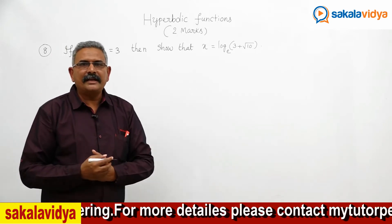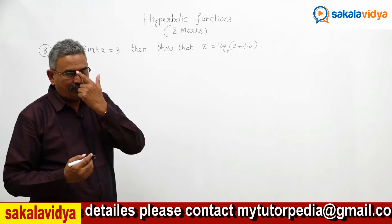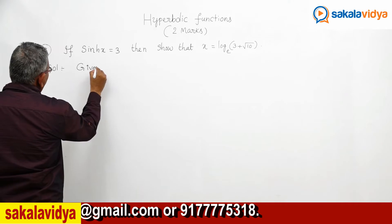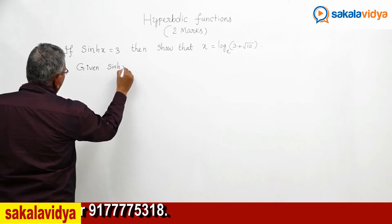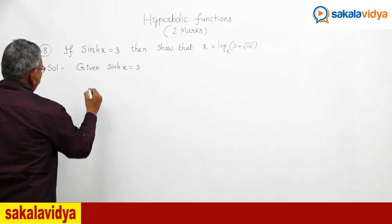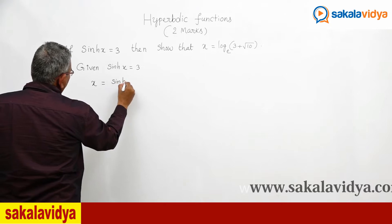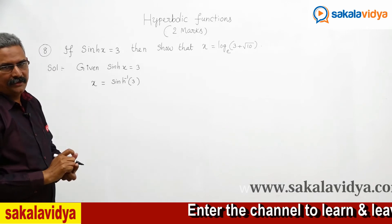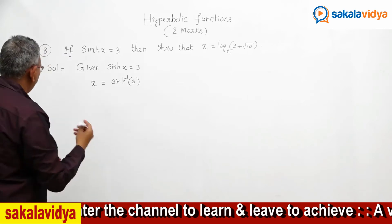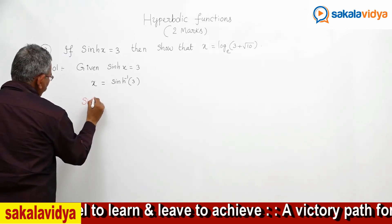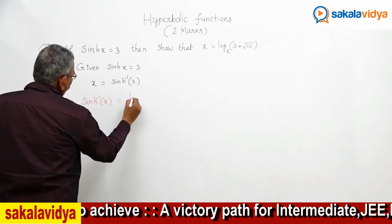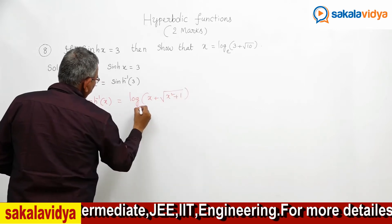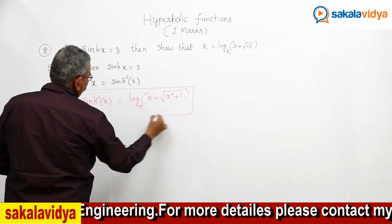It can be solved using the formula for sinh inverse x in terms of the logarithmic function. Given sinh x equals 3, we need to find the value of x. So x is equal to sinh inverse of 3. We recall the formula: sinh inverse x equals log of x plus root of x squared plus 1, to the base e.